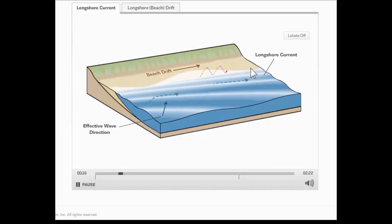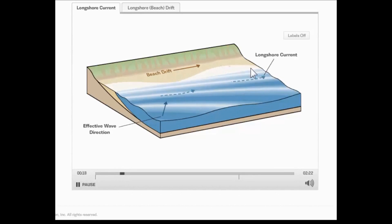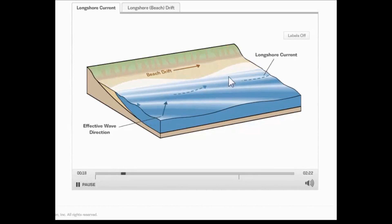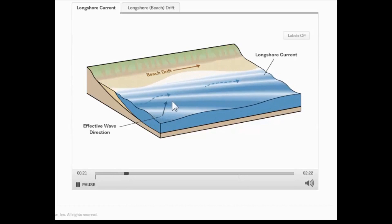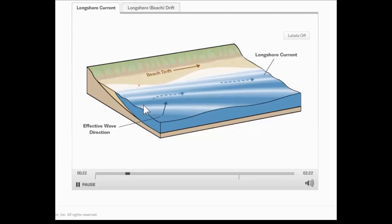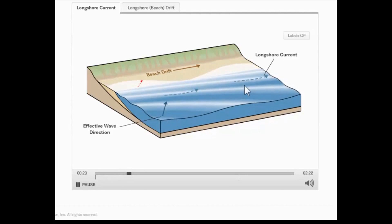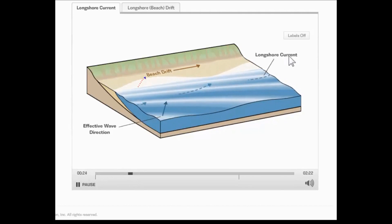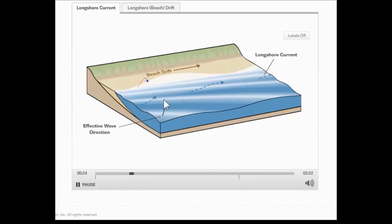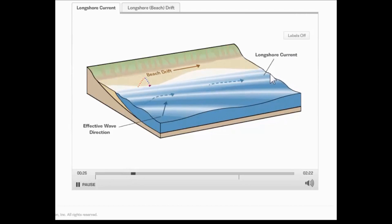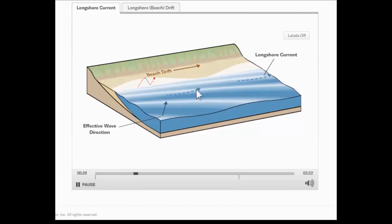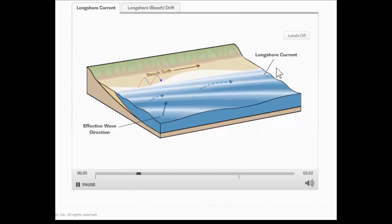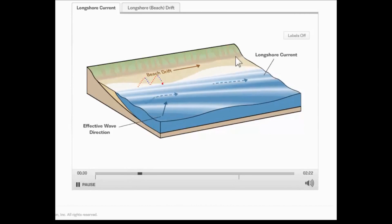This is called longshore drift or longshore transport. The movement of sand occurs not just on the beach itself but also in the surf zone, before the waves even come to the beach, because the movement of the waves creates a current called a longshore current.